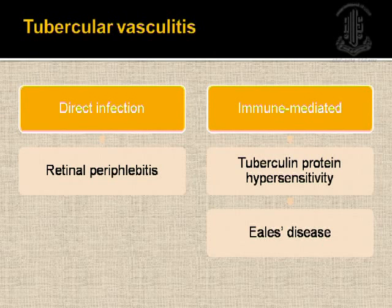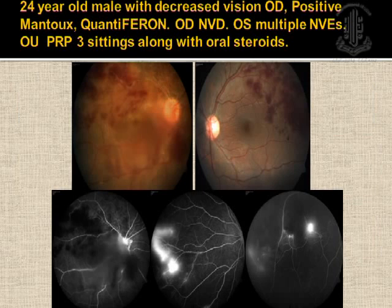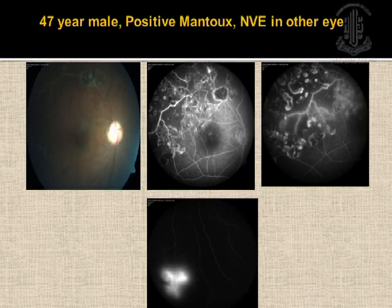VKH is a multi-system disorder characterized by bilateral granulomatous pan-uveitis with exudative retinal detachment, associated with various systemic manifestations. It is also called uveo-meningeal syndrome. It was first described by an Arabian physician and later by Vogt, Koyanagi, and Harada. In 1978, the American Uveitis Society proposed a diagnostic criteria based on clinical manifestations, without FFA and ultrasound findings.